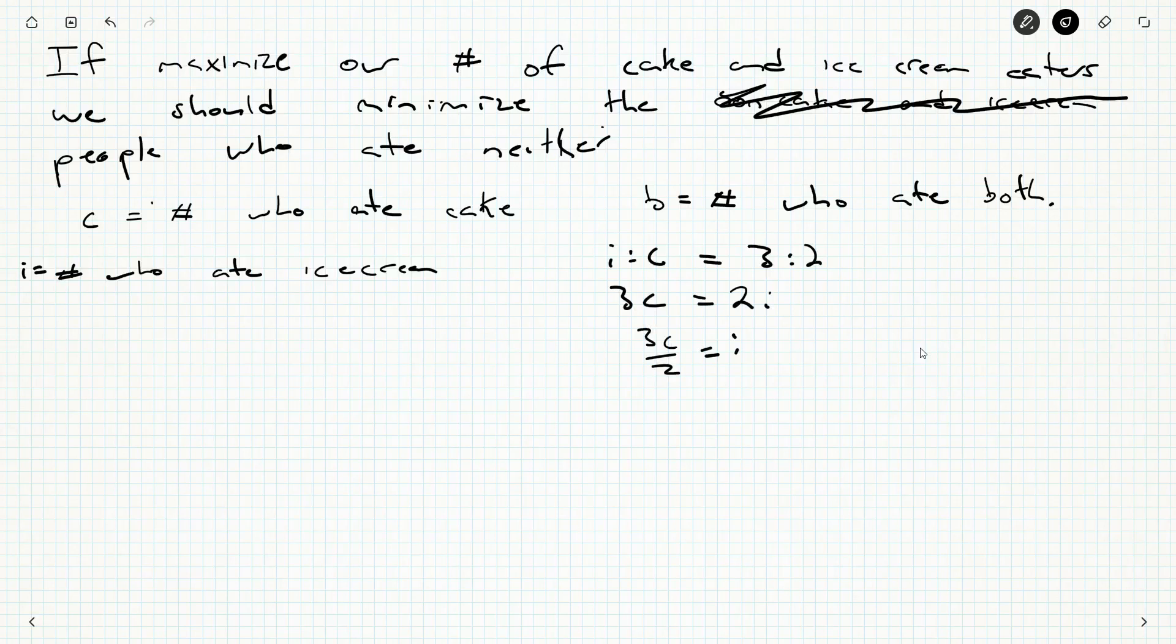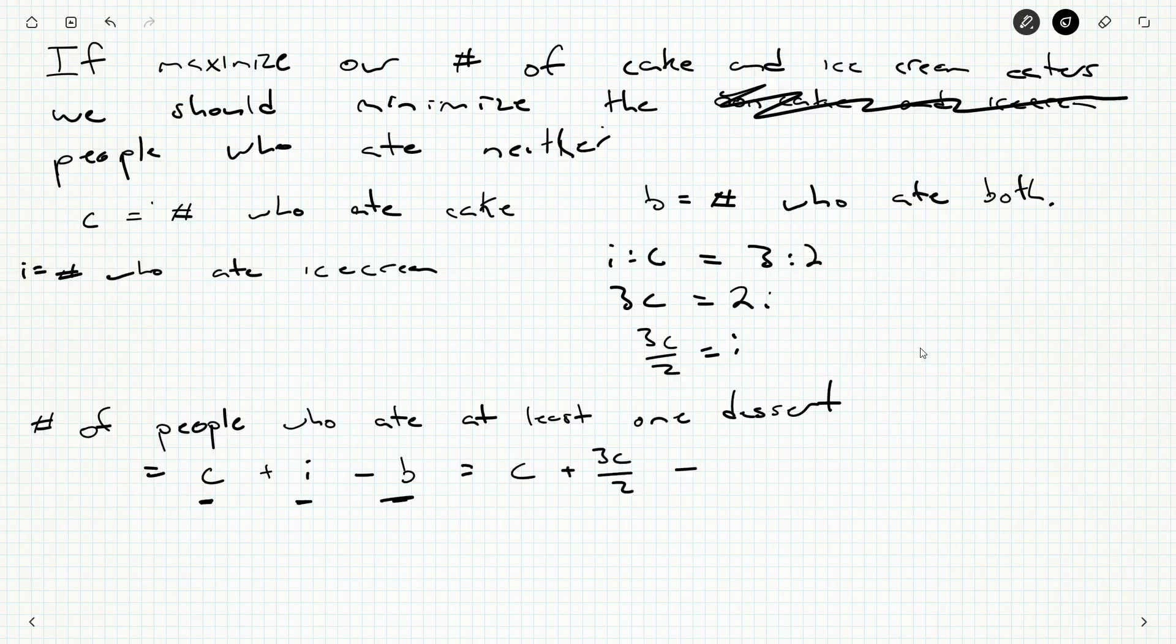So three times C is the same as two times I. This is how it works when you have ratios. If I wanted I, I could just say it's three halves of C. So I don't really need another variable I. Well, the number of people who ate at least one dessert is the number of people who ate cake, plus the number of people who ate ice cream, but included in both of these is the B's, the people who ate both, and they're being counted twice, so we subtract off B. This is what's called the principle of inclusion and exclusion. I can replace that I with a 3C over 2, and say 5C over 2 minus B.